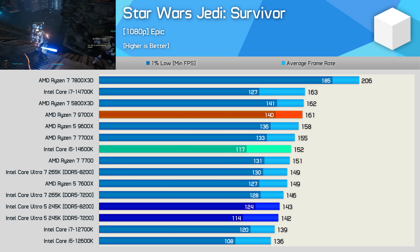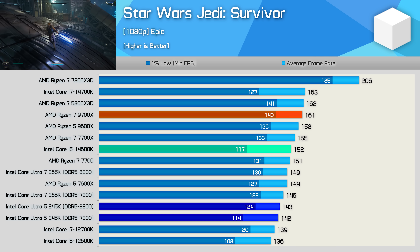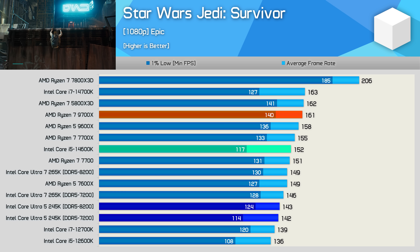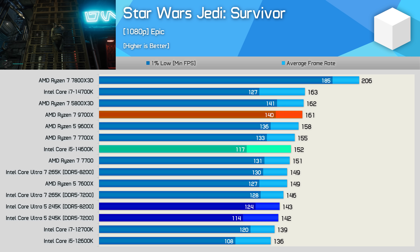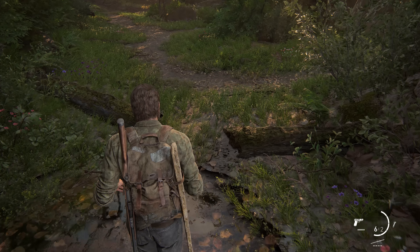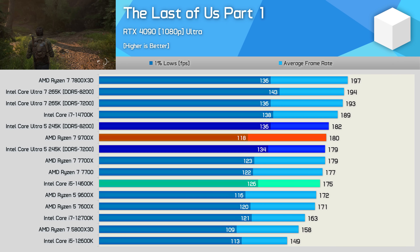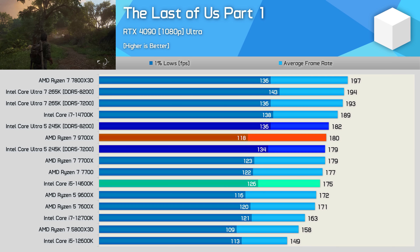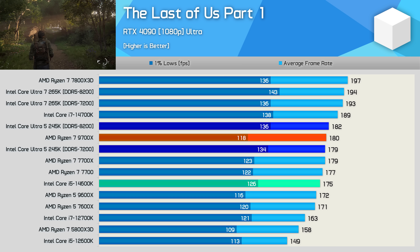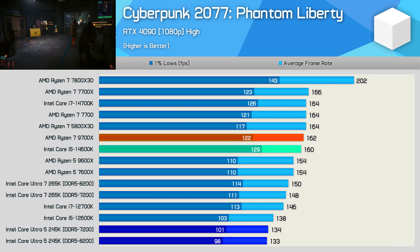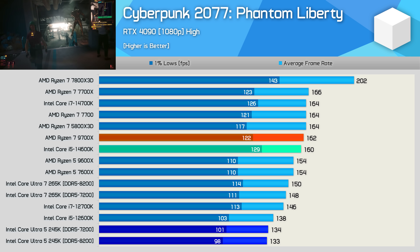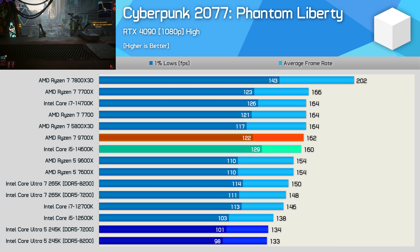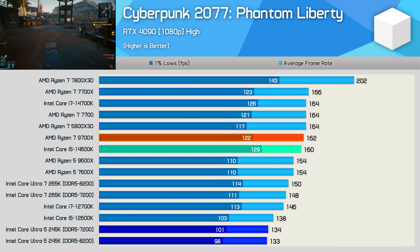Moving to gaming benchmarks, starting with Star Wars Jedi Survivor: the 245K doesn't look great with just 142 fps on average using DDR5 7200 memory, making it 7% slower than the 14600K and 12% slower than the 9700X. In The Last of Us Part 1 it fares better, roughly matching the 9700X at around 180 fps, though only a 2% improvement over the 14600K. In Cyberpunk 2077 Phantom Liberty, even with the prioritized P core option enabled, the 245K is very slow — behind even the 12600K, 16% slower than the 14600K and 17% slower than the 9700X.